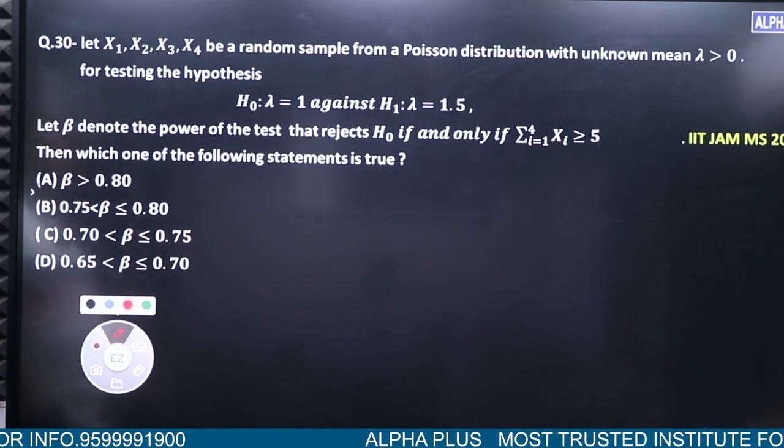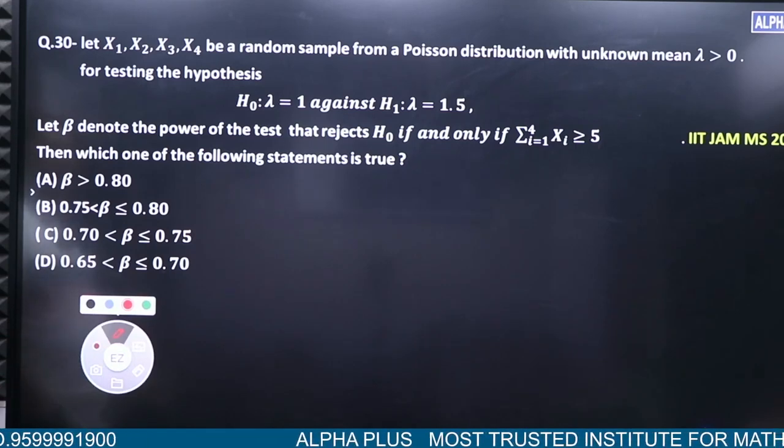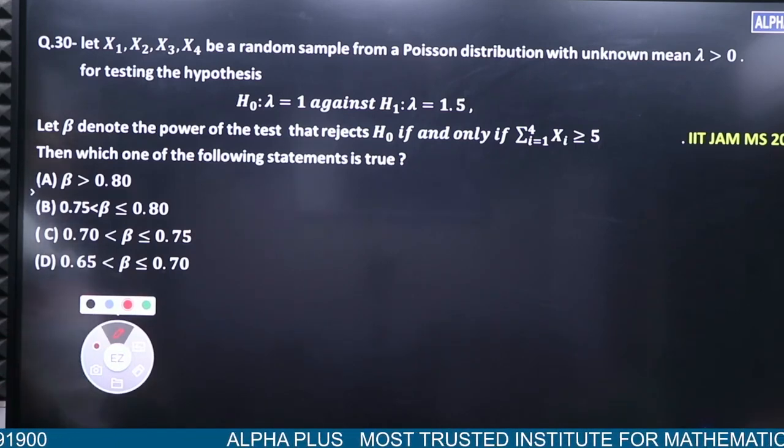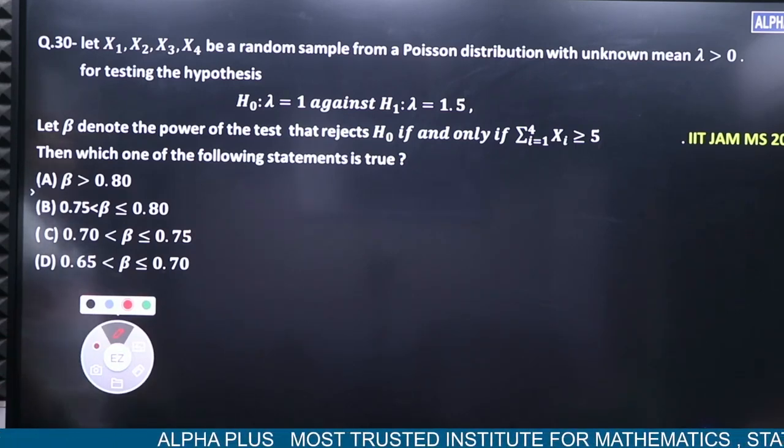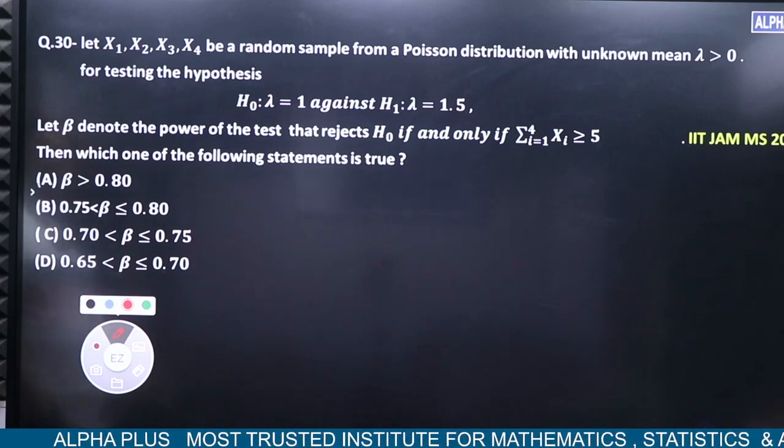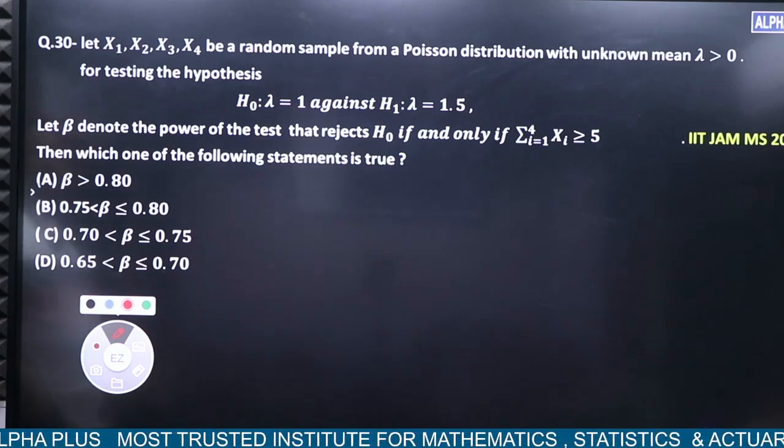Be a random sample from Poisson distribution with unknown mean lambda. Testing the hypothesis H0: lambda = 1 against H1: lambda = 1.5. Let beta denote the power of the test that rejects H0 if and only if summation xi is greater than 5. Then which of the following statements are true?